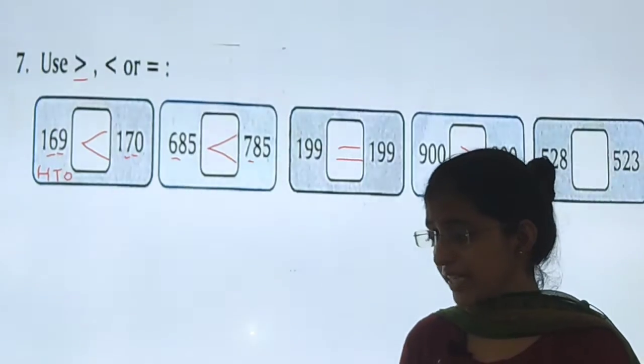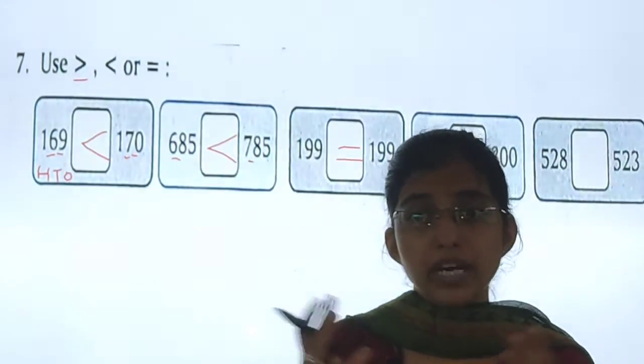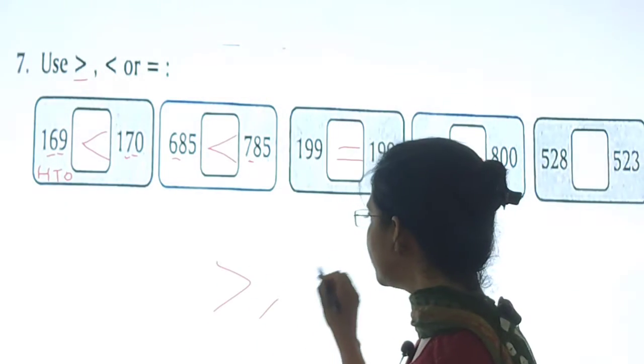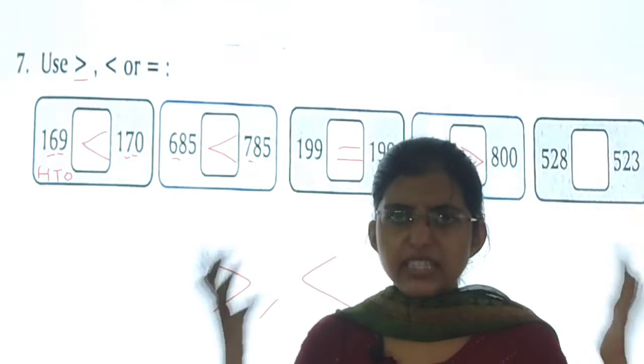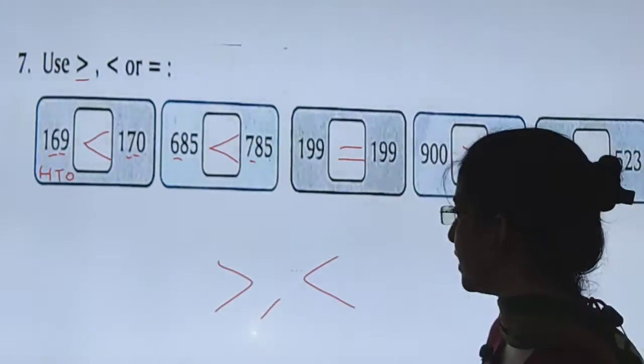Now, sometimes it might happen, ki you understand everything. But when the question paper comes, you might get confused. That which sign will come? This sign will come? Or this sign will come? Greater than, less than? Oh man, with so much of confusion. What to do? I will give you a simple tip.